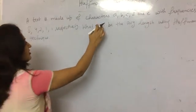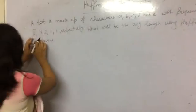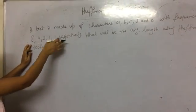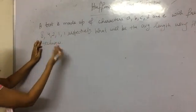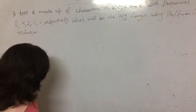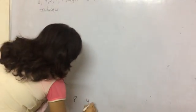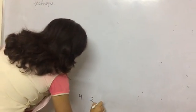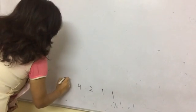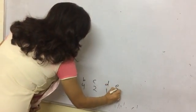Let's start. First of all, we will write these characters in descending order of their frequency. Here, it's already given in descending order, so we don't have to do much. Just write in descending order the frequencies of these characters: A, B, C, D, and E.